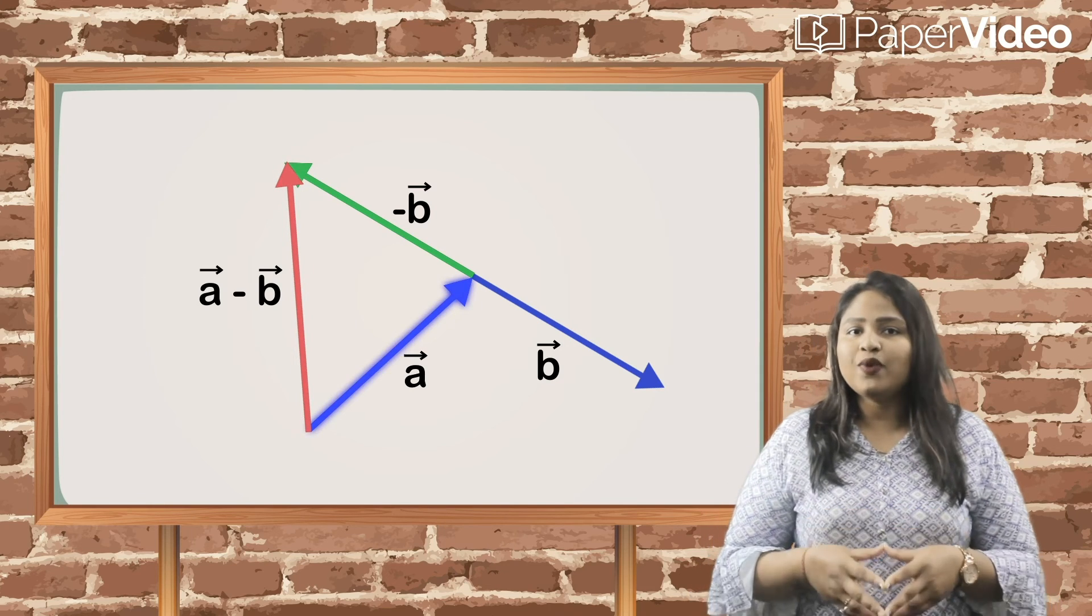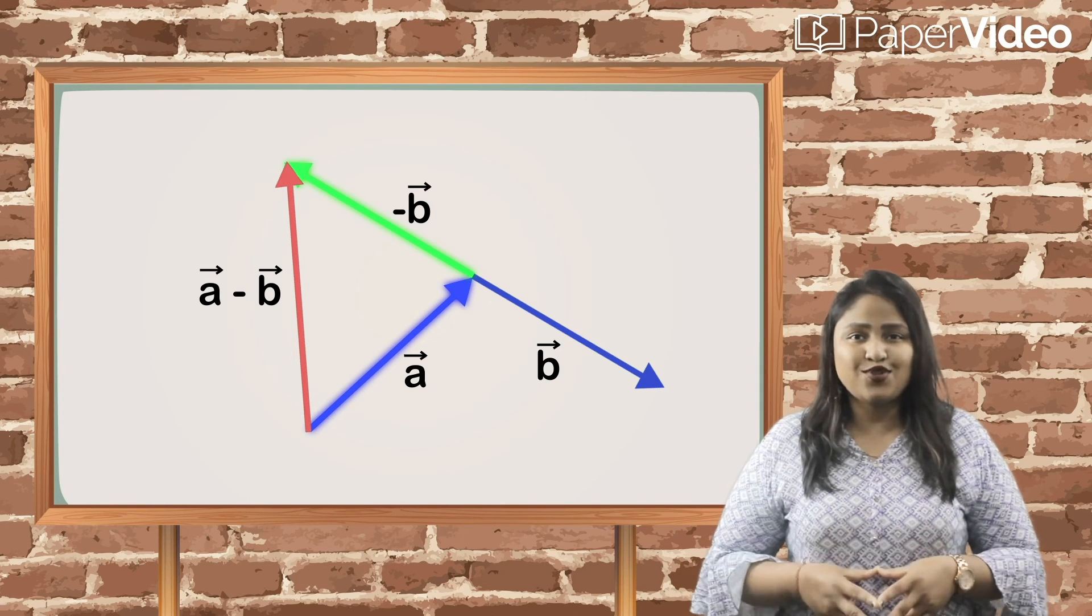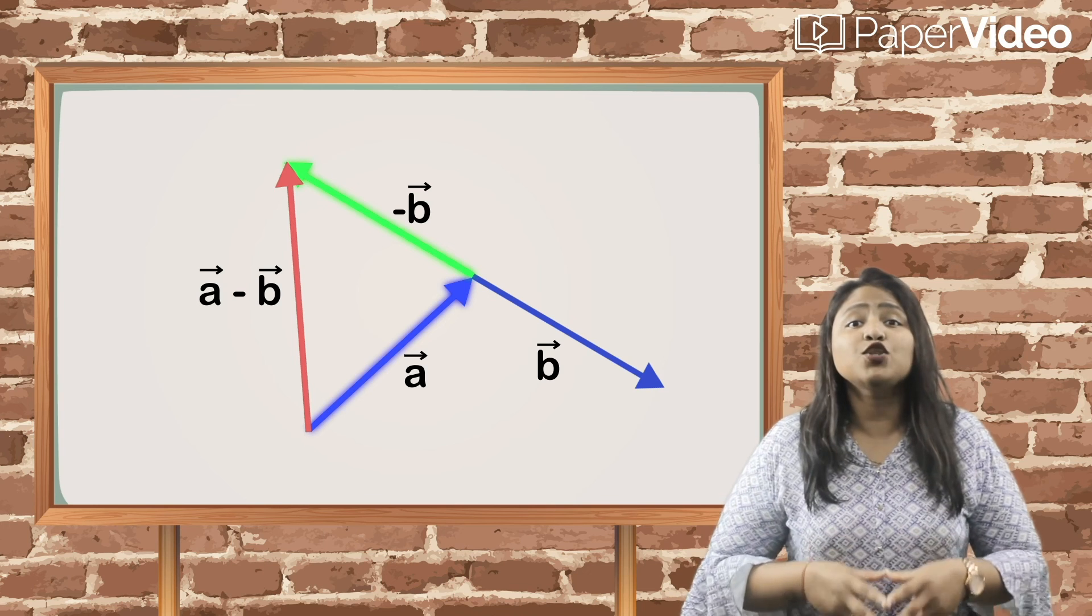In other words, subtraction of two vectors can be done by reversing the vector to be subtracted and then adding it to the first vector.